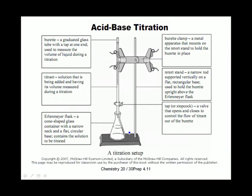Here's the setup of a titration. One key piece of equipment is a burette — a glass tube that contains a substance dripped down into an Erlenmeyer flask. The burette is held up by a burette clamp and a retort stand, which is basically just a stand we can attach things to with clamps. The tap, or stopcock, is on the burette and is what opens or closes it.